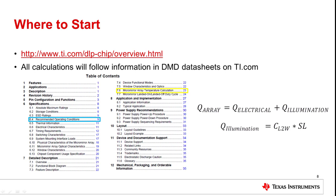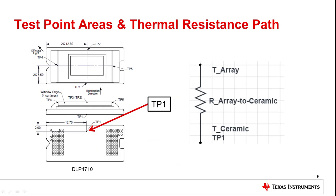The equation and sample calculation presented on the previous slide is located in section 7.6 of the datasheet, titled Micromirror Array Temperature Calculation. Thermal resistance for each DMD is defined from the active array to the back of the ceramic package. This point on the back of the ceramic is referred to as test point 1, and for this particular DMD, the coordinates are shown here. All DMDs with a thermal interface have a specified location for test point 1, with a defined location within the associated datasheet.